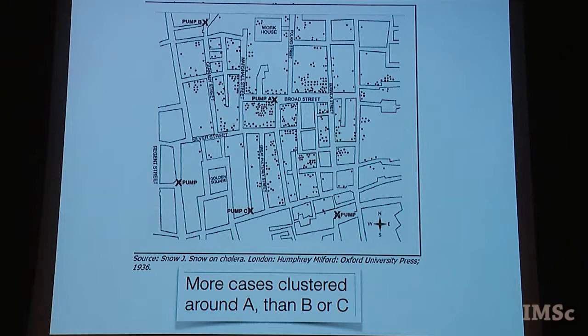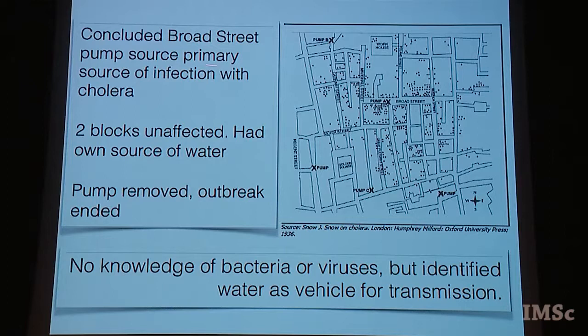Just from where you are in the audience you can see there are a lot more cases near Pump A, relatively few near this pump, hardly anything near Pump C, and not too many near the other pumps. But Pump A on Broad Street has lots of dots — many patients who fell ill with cholera. He concluded that this pump was the primary source of infection. He also noticed that two blocks were pretty much empty: they had their own water source, and were employed by a brewing company whose head gave them a lot of alcohol in lieu of water, which is why there were no cases from those two blocks.